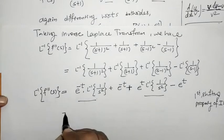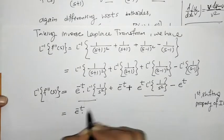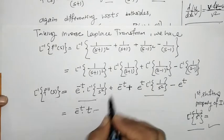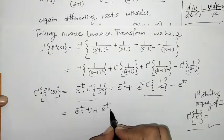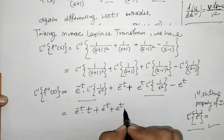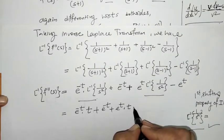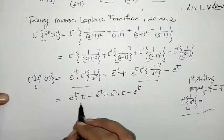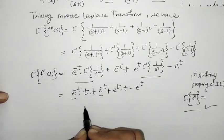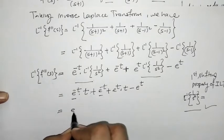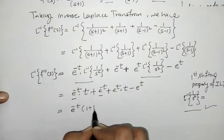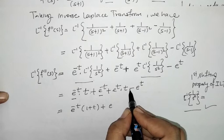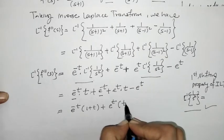So L⁻¹ of 1/s² is t, giving e^(−t)·t. And e^(−t) as it is. Similarly e^t·t and e^t. We can simplify by taking e^(−t) common, giving e^(−t)·(1+t). Same here, taking e^t common gives e^t·(t−1).